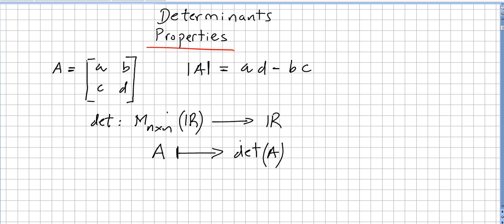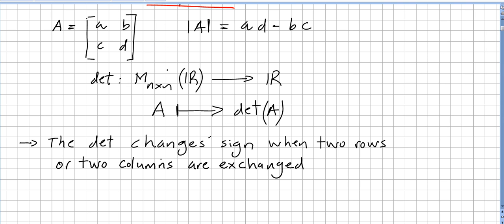We are not going to get into this. We are simply jumping to the properties of these determinants 2x2 and deduce for some other dimensions. So we get directly into the first property. The determinant changes sign when two rows or two columns are exchanged. This is easy to see.